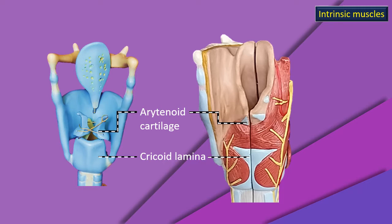The arytenoid cartilage and the cricoid lamina are shown here in posterior view of the larynx model — one without muscle, one with muscle and mucous membrane covering. The key muscle here is the posterior cricoarytenoid, shown on the posterior cricoid lamina. This is the only muscle that causes abduction of the vocal cords — in other words, widening of the rima glottidis. All other muscles, irrespective of their names, cause adduction of the vocal cords and reduction of the rima glottidis.